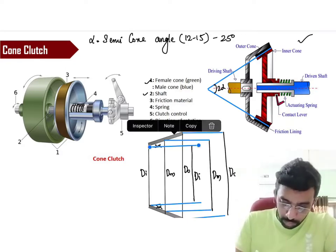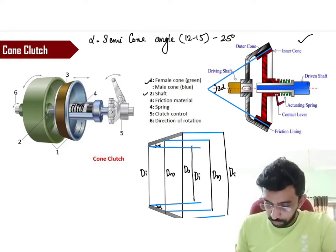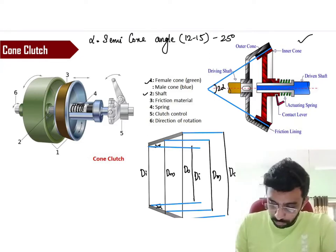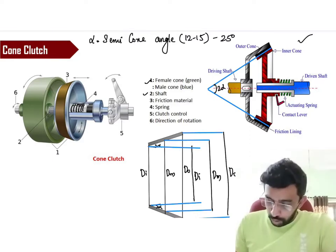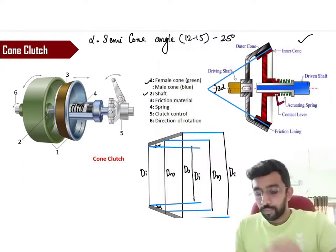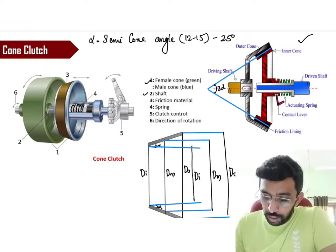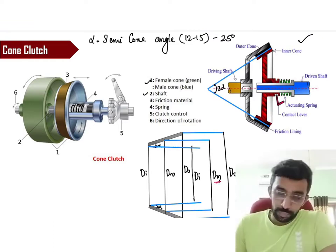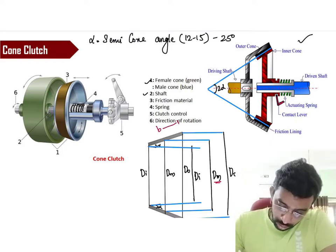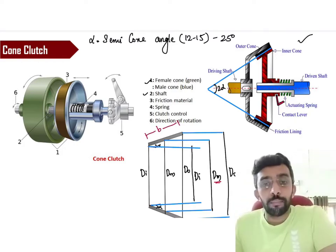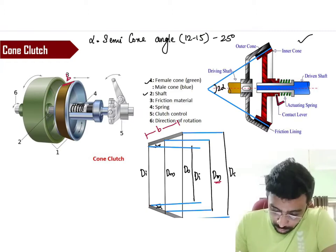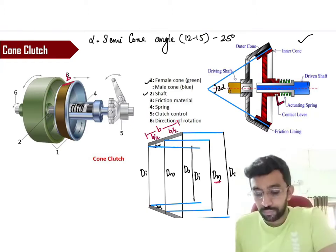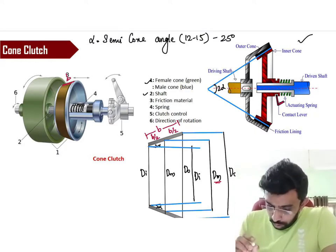Now, let's draw some lines. If you look here, I will say that this is going to be d_inner, this is going to be d_mean, and this is going to be d_outer. I will say that I will draw one more line here.